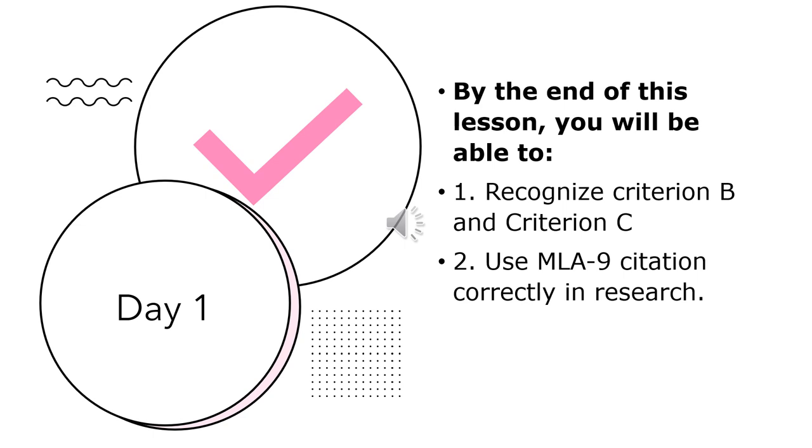Let me start by talking about Day 1. By the end of this lesson, you will be able to recognize Criterion B and Criterion C. We're going to talk more about them, I'm going to clarify them. You're going to use the MLA-9 citation correctly in research. Remember that we are visiting the library for more information about research. Please pay more attention in the library and write notes.